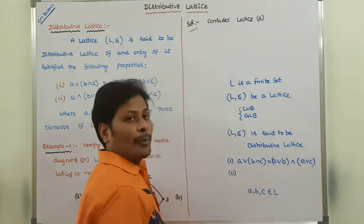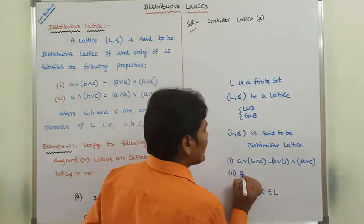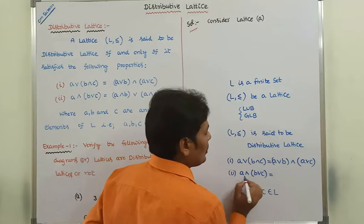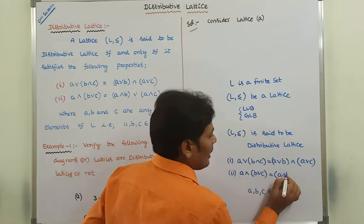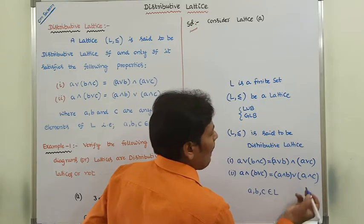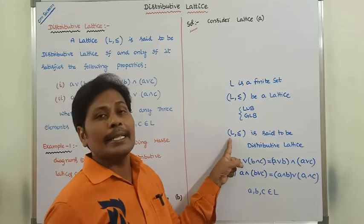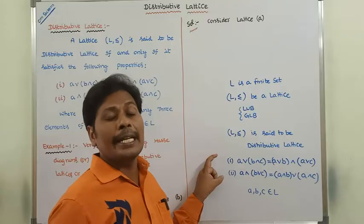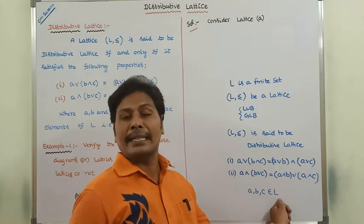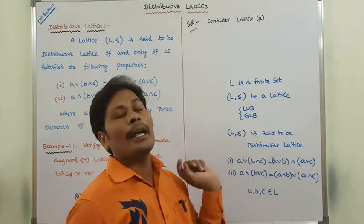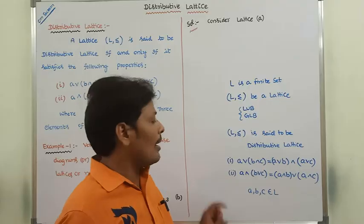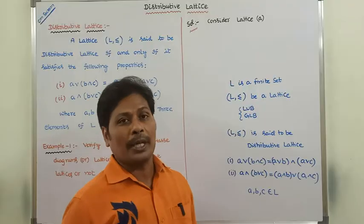The second property is: A meet (B join C) is equal to (A meet B) join (A meet C). Whenever this lattice satisfies these two properties by taking three elements from the given set L, then (L, ≤) is the distributive lattice because it satisfies these two properties.